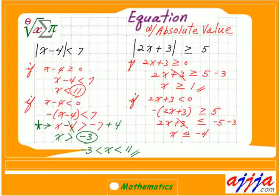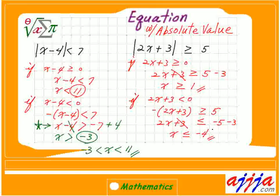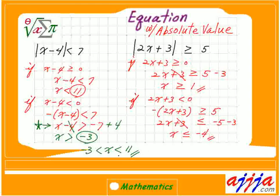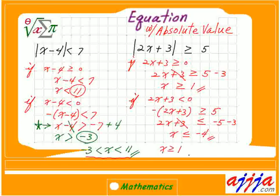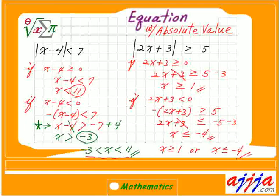Think about this. X should be greater than 1, and x should be less than negative 4. That means you cannot put them together — these answers cannot be combined. So separately you have the answer: x is greater or equal to 1, or x is less than negative 4. Two separate answers.